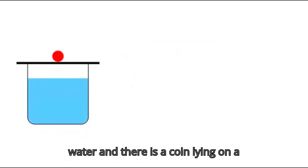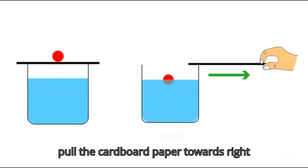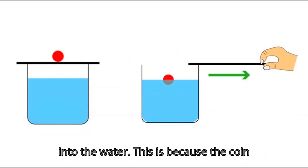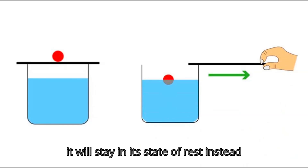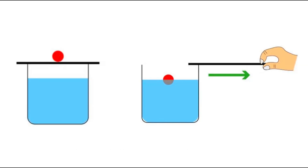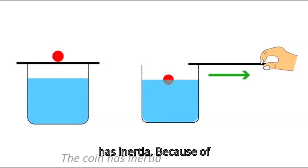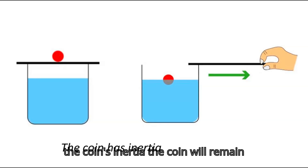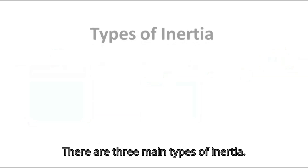Consider a glass of water with a coin placed on a piece of cardboard paper. If we pull the cardboard paper towards the right, the coin will fall into the water. This is because the coin has mass, and because of that mass it will stay in a state of rest. Instead of going to the right, it will remain in its state of rest due to inertia, and fall downward instead of moving to the right.